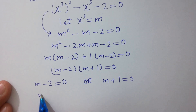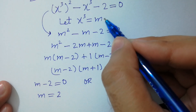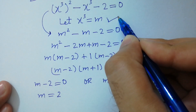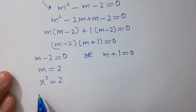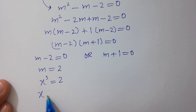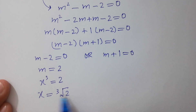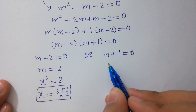From m minus 2 equal to 0, m equals 2. But m equals x cube, so x cube equals 2. Taking the cube root on both sides, we get x equals the cube root of 2.